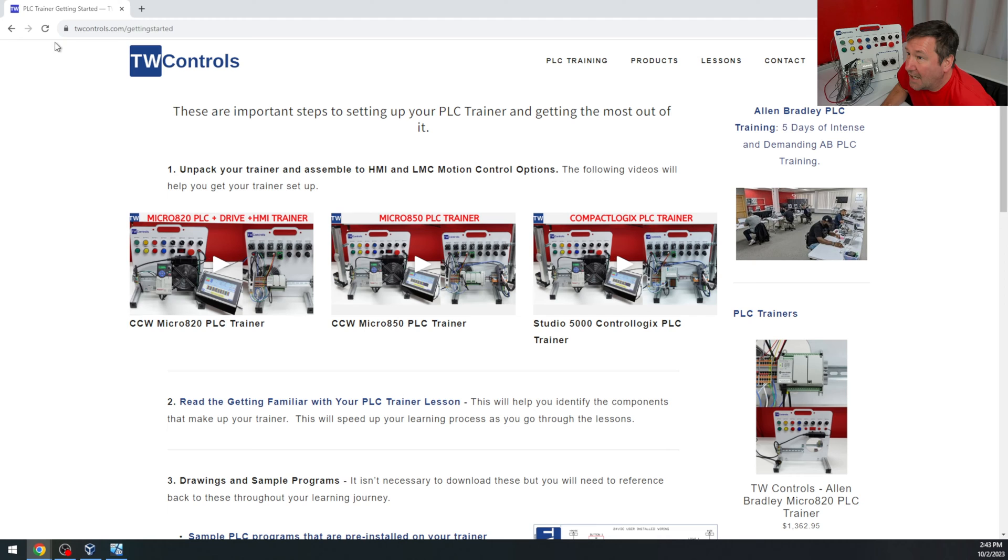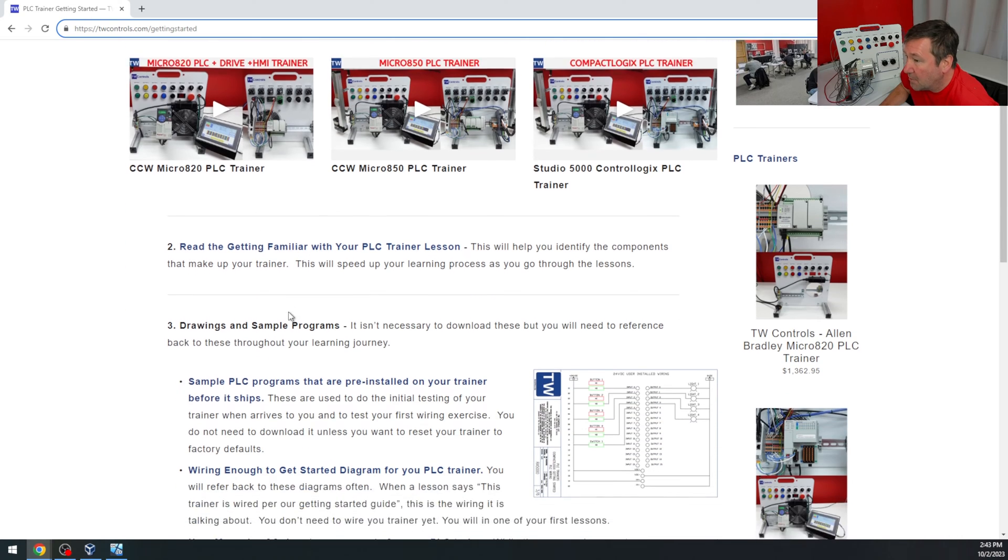The easiest way to find the wiring diagrams is to go to twcontrols.com/getting-started. That's the link on the insert that came with your trainer. That'll bring you to this page that has good info about unpacking your trainer and getting familiar with it.